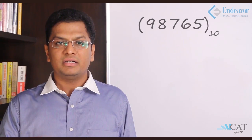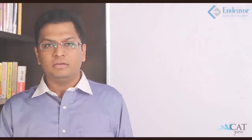Let's understand positional notation more deeply. Take the number 98765 in base 10. We write it as: 9 × 10⁴ + 8 × 10³ + 7 × 10² + 6 × 10¹ + 5 × 10⁰. Each digit is multiplied by the base raised to its positional power, starting from power 0 on the right.